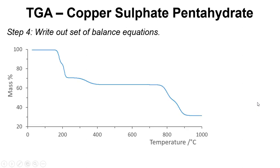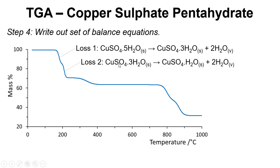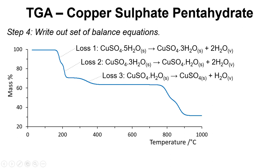Now we've got some leaving groups we can move on to step 4, which is to write out a set of balanced chemical equations. Loss 1: starting with CuSO₄·5H₂O, we lose 2 lots of water vapour, leaving CuSO₄·3H₂O as the solid. Loss 2: starting from CuSO₄·3H₂O, we lose 2 lots of H₂O, leaving copper sulfate monohydrate. Loss 3: we lose the final water. Loss 4: we lose SO₂ and half O₂, so finally we're left with CuO, copper oxide.